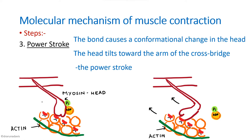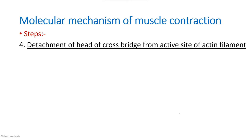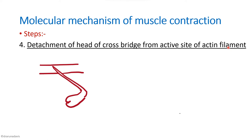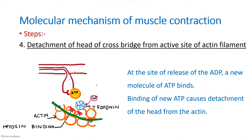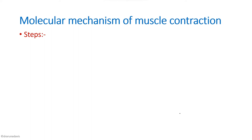After the power stroke, the myosin head is free. The fourth step is detachment of the head of the cross-bridge from the active site of the actin filament. Since ADP and phosphate have been removed, this site is now free for ATP to bind. New ATP binds to the myosin head, and the myosin-ATP complex has less affinity for the myosin binding sites on actin, so the myosin head detaches. Remember, it is the binding of ATP that causes the detachment.